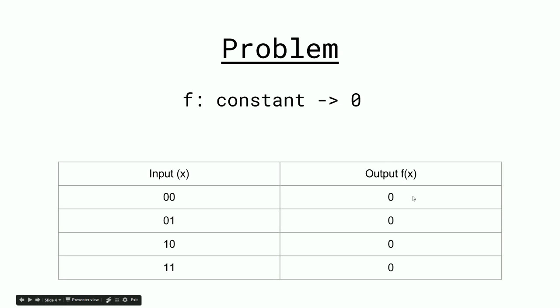So here's an example of a constant function. It's also pretty simple. No matter what input you put into it, it always outputs zero. And here we see that, sure enough, no matter what the input is into this function, it always outputs zero. And because it does so, it's a constant function. If it also outputted all ones, it would also be a constant function.